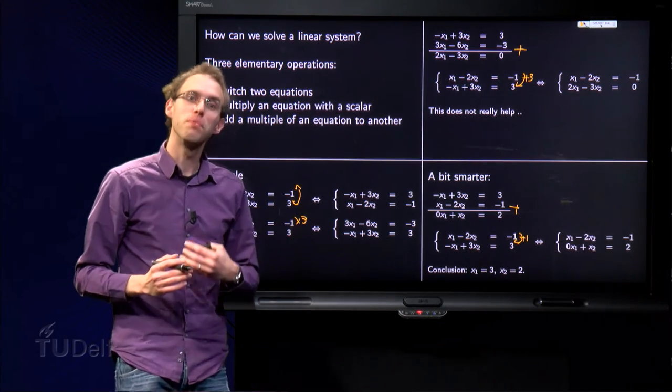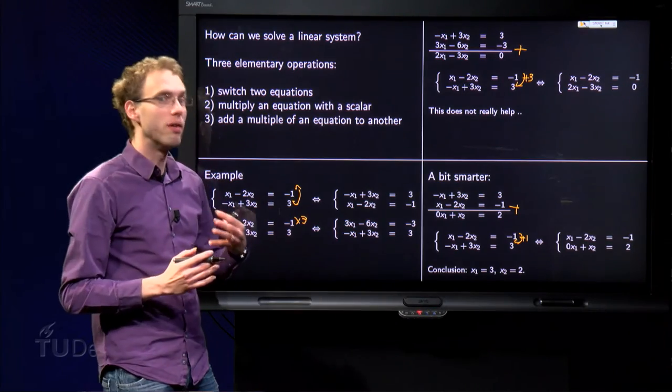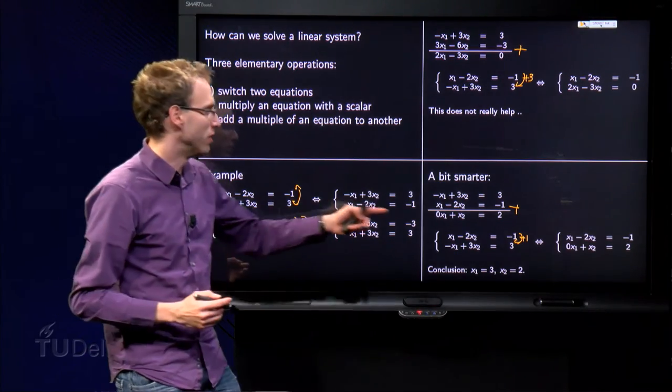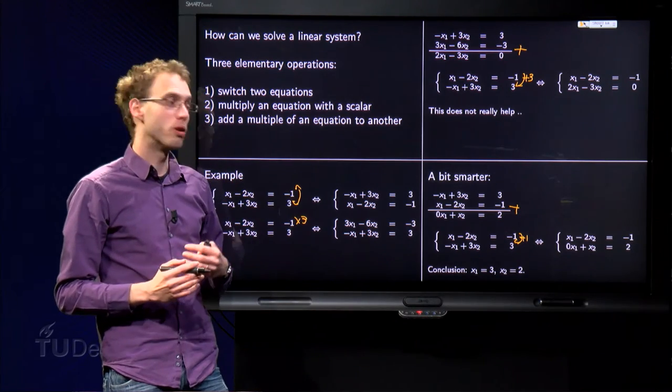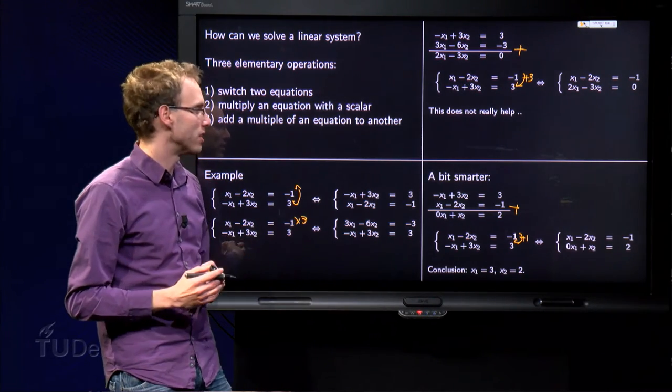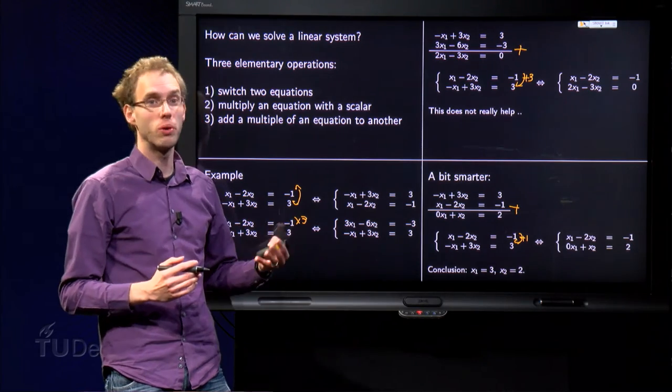Now we have simplified our system and can see the solution. Once we know x2 equals 2, we can use the first equation to compute x1. We have x1 minus 4 equals minus 1, so x1 equals 3.